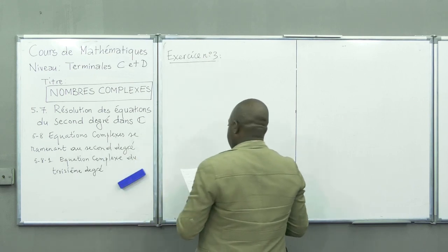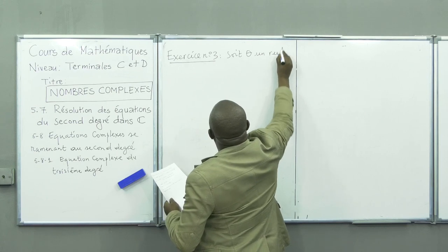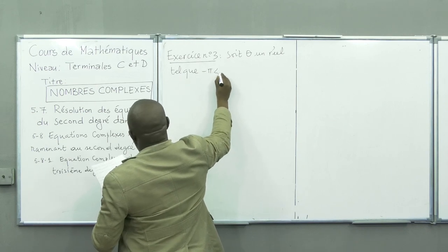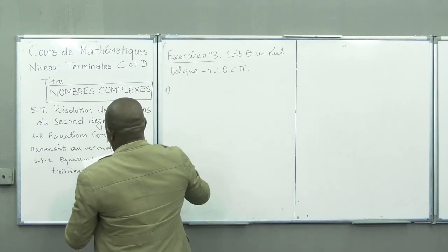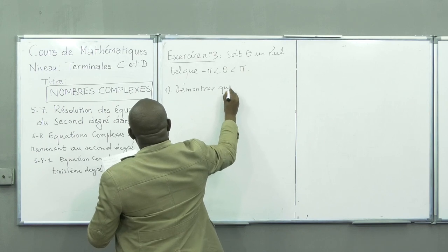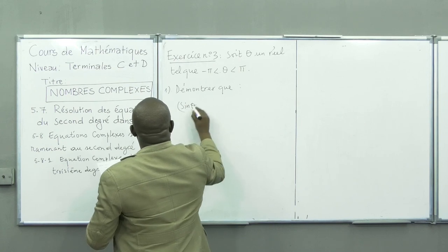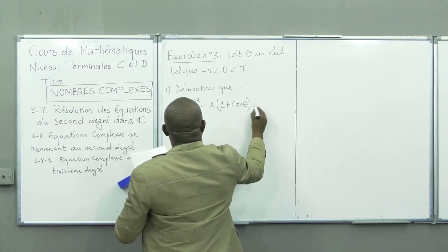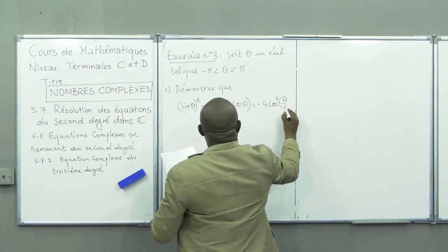L'exercice dit ceci : soit θ un réel tel que -π < θ < π. La première question, on nous demande de démontrer que sin²θ - 2(1 + cosθ) = -4cos⁴(θ/2).